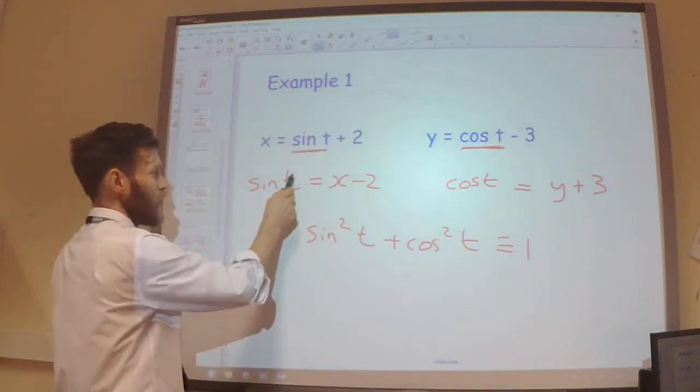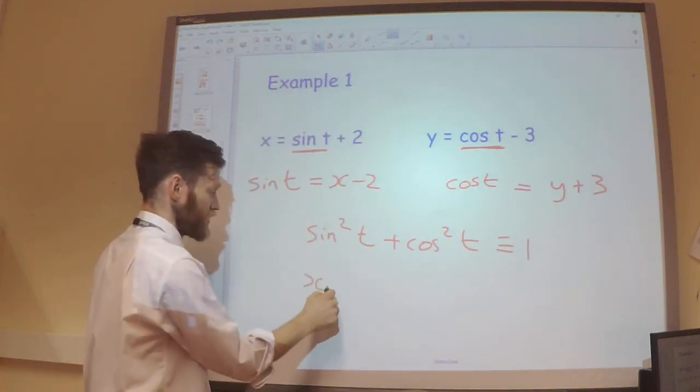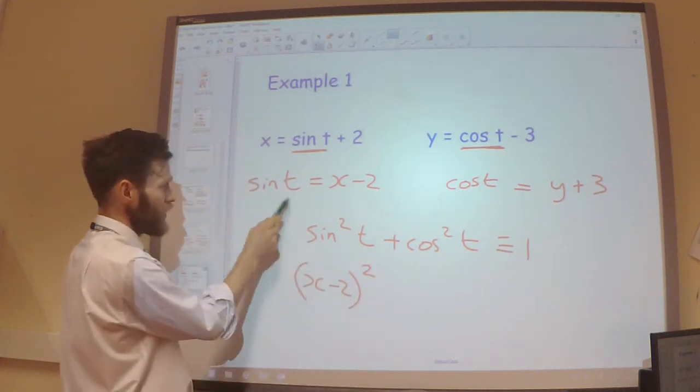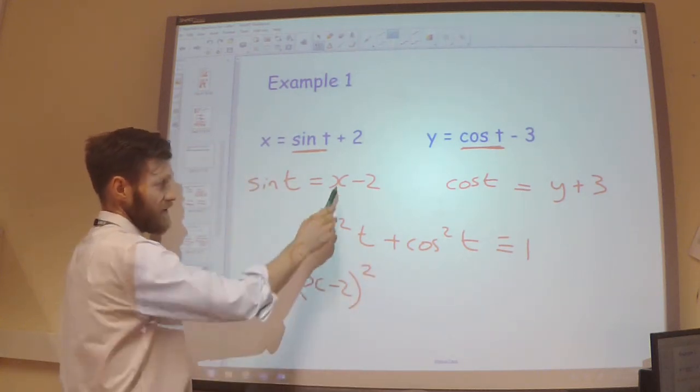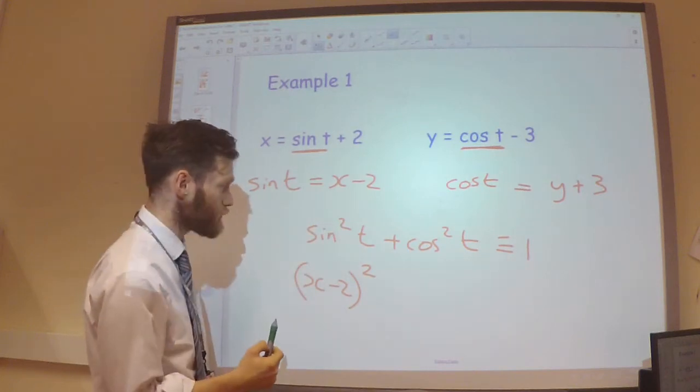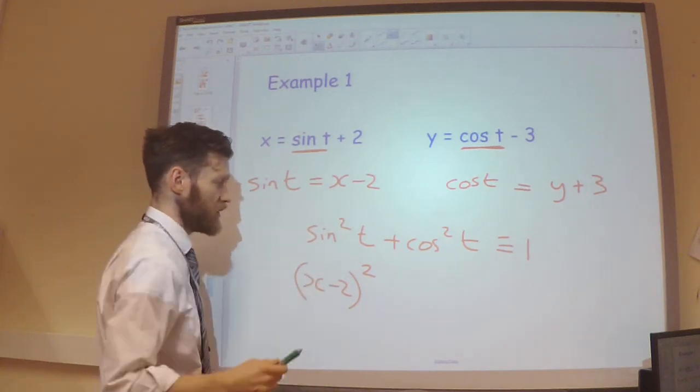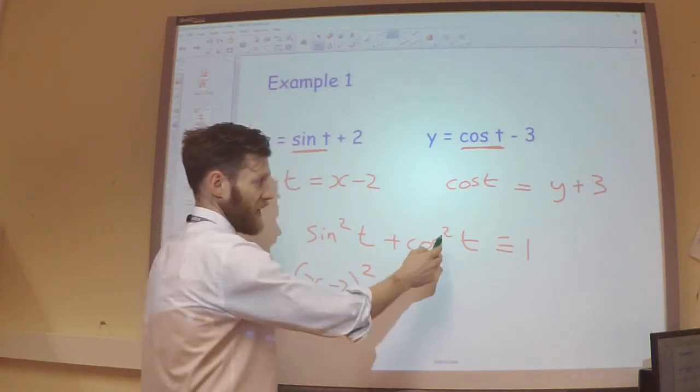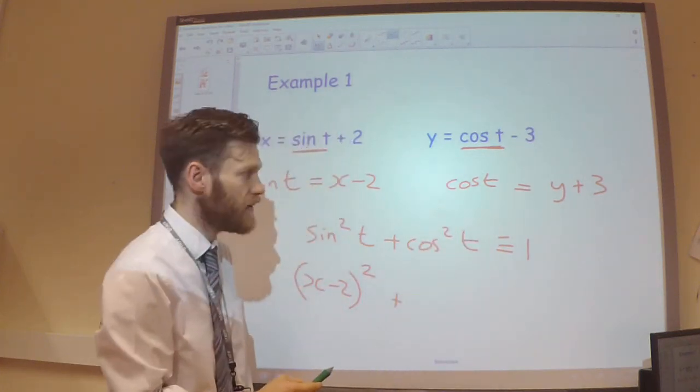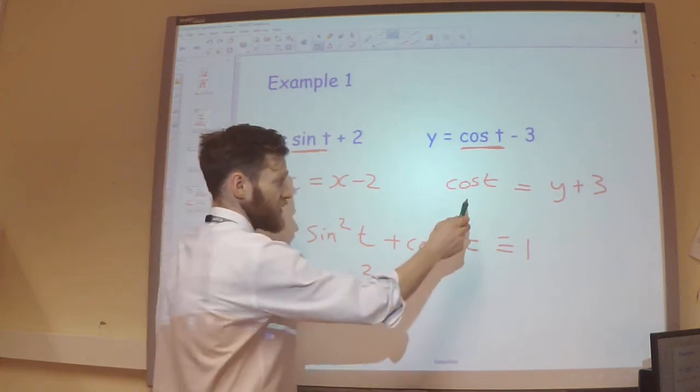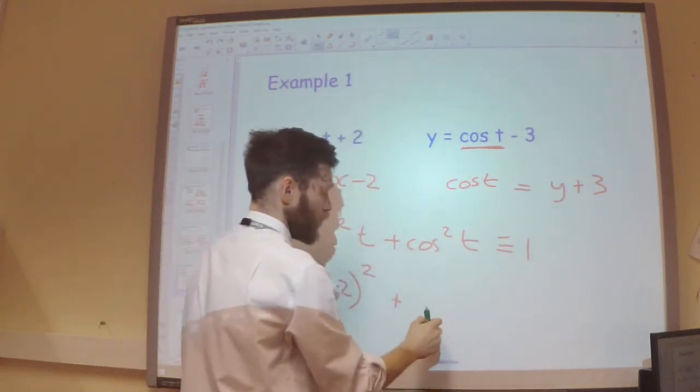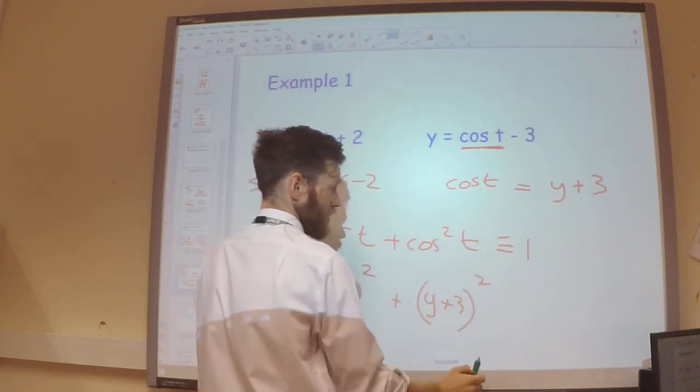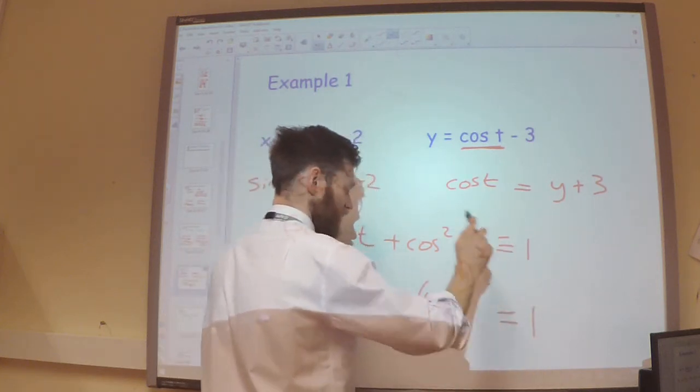Right, so the rule I know is sine squared t plus cos squared t would have to be 1. So if I'm going to square this, I would get x minus 2 all squared. So sine squared is x minus 2 squared. Same idea over here. I'm going to square the cos t. And so if I square the cos t, I would get y plus 3 squared, which is equal to 1.